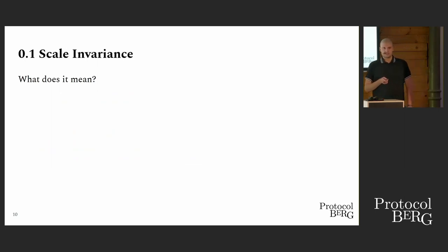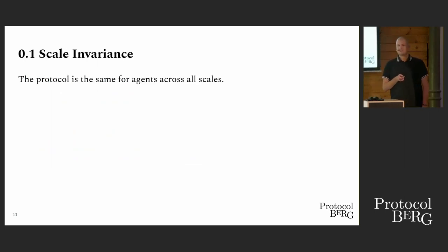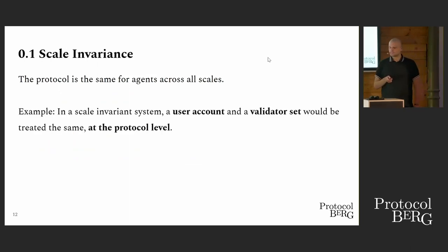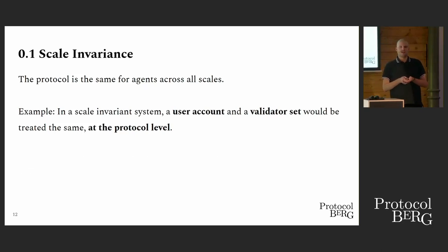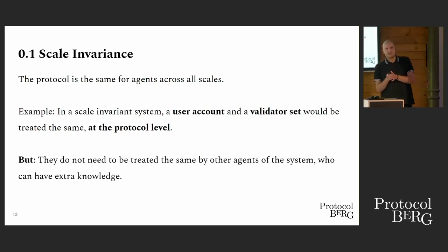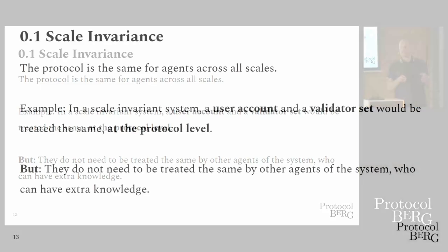So what is scale-invariance? Scale-invariance means that the protocol is the same for agents across all scales. For example, in a scale-invariant system, a user account that you know from Ethereum and a validator set would be treated the same at the protocol level. But it doesn't mean that the behavior of all agents to all agents needs to be the same, because they can have extra knowledge.